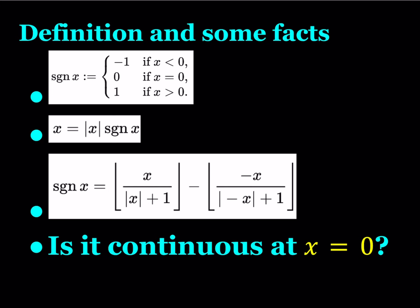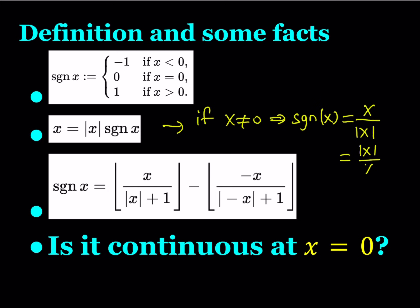If you look at the second bullet point, you notice the relationship between the absolute value and the signum function, and obviously this is true for all values. But if x does not equal 0, then we can write something nicer. We can write the signum function as x divided by the absolute value of x, or absolute value of x divided by x, because those two expressions are obviously equivalent if x does not equal 0. For x equals 0, it's a different story — you can take the limit, but not find the particular value.